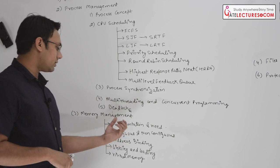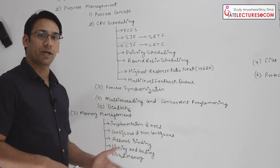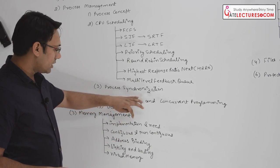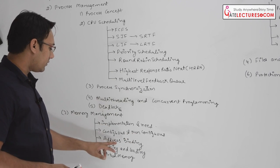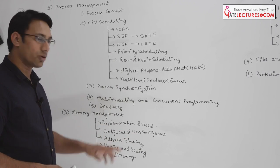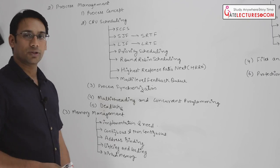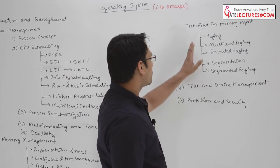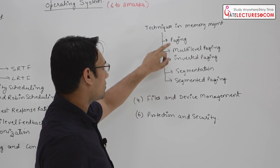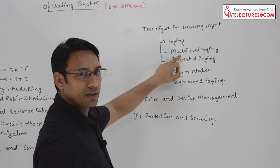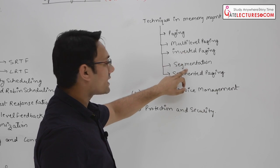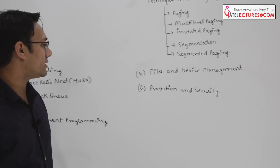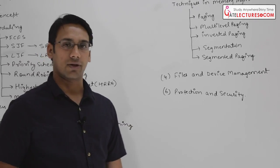We can categorize memory management into two types: number one is contiguous memory management, and number two is non-contiguous. Then we will discuss about address binding, linking, and loading. Then we are going to discuss about virtual memory. After that, we will discuss techniques in memory management including paging, multi-level paging, inverted paging, segmentation, and segmented paging. Then we will cover file management, device management, and protection and security.